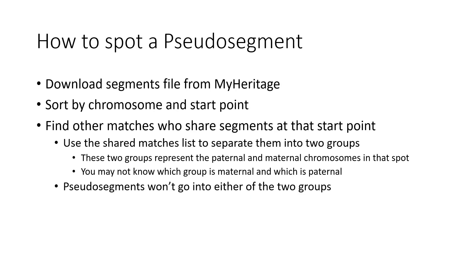In summary, here's how to spot a pseudo segment: download your segments file from MyHeritage, sort by chromosome and start point, and find other matches who share segments at that start point. Then use the shared matches and triangulation icons to separate them into two groups — these two groups represent the maternal and paternal chromosomes at that spot. You may not know which group is maternal and which is paternal, but that's okay. Pseudo segments will not go into either of these two groups.